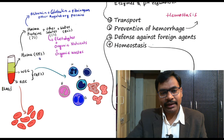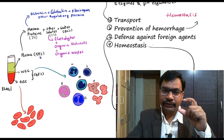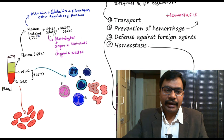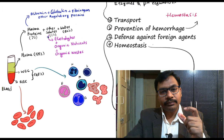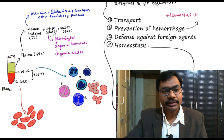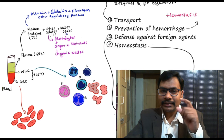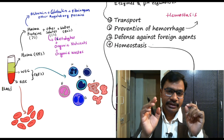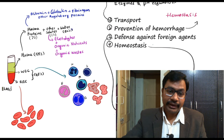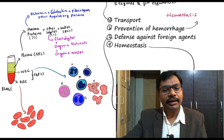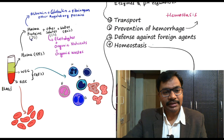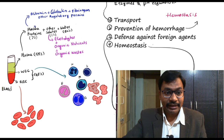Looking at plasma, it comprises 55 percent of the total volume of blood. In plasma we have different substances: plasma proteins, plasma solutes, and water as the majority. Water is the major part of plasma — 92 percent of plasma is water. The solutes constitute 1 percent and plasma proteins are 7 percent.